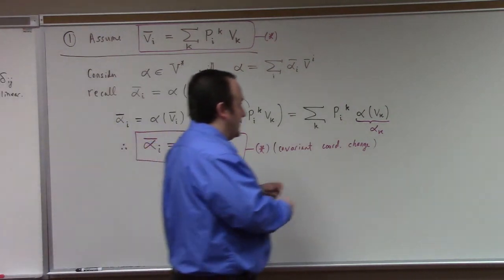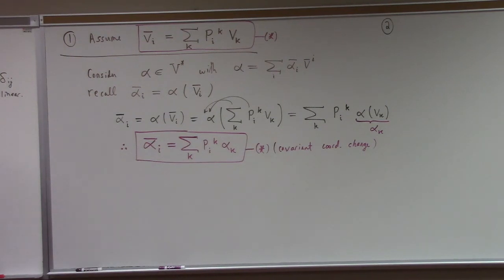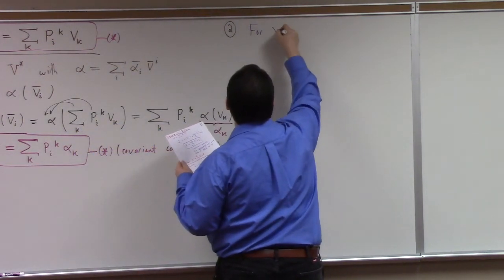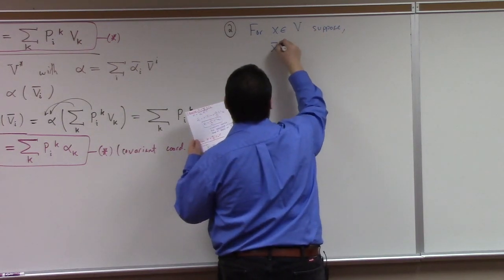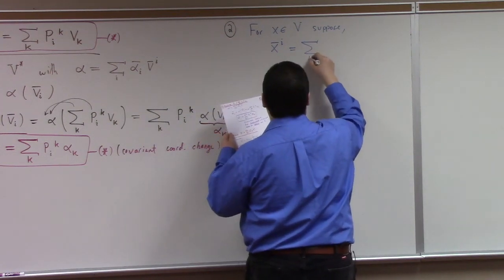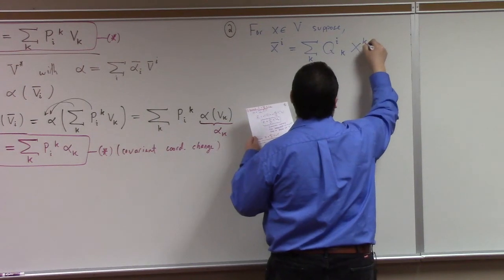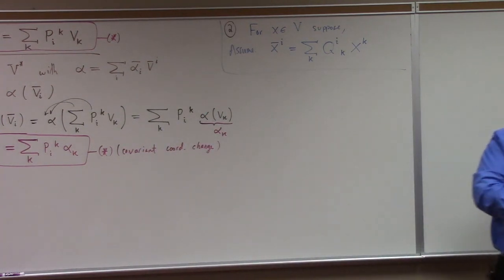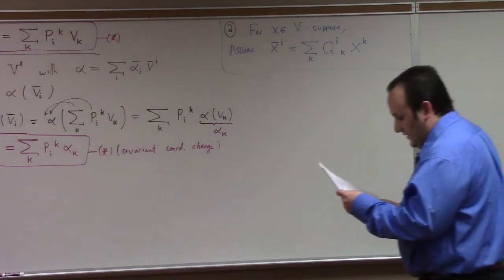That's point number one. Number two: suppose you have a different matrix Q, where Q is the thing that relates the coordinates for a given vector. So for X in V, suppose that X̄ⁱ equals the sum over k of Qⁱₖ Xᵏ. We know this is possible because of course we can relate the coordinates of a given vector with respect to either beta or beta-bar. There has to be some matrix which takes you from one to the other, because that relation is also a linear relation.